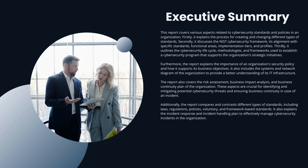Furthermore, this report explains the importance of an organization's security policy and how it supports its business objectives. It includes a system and network diagram of the organization to help understand IT infrastructure. This report also covers risk assessment, business impact analysis, and business continuity plans, which are very important for identifying and mitigating potential cybersecurity threats. Additionally, it compares and contrasts different types of standards including laws, regulations, policies, voluntary and framework-based standards, and finally wraps up with the incident response and handling plan.